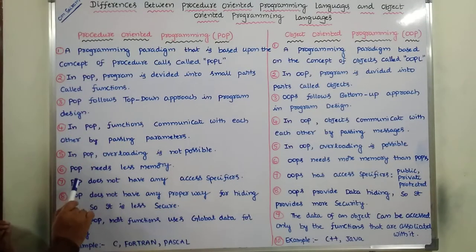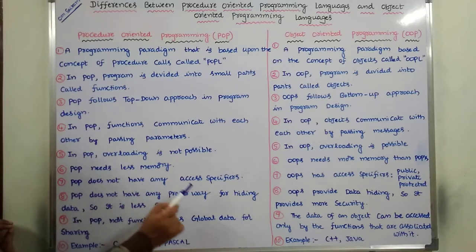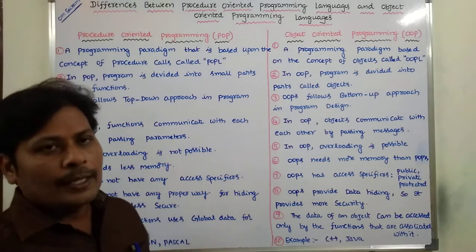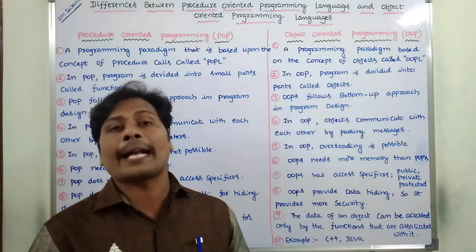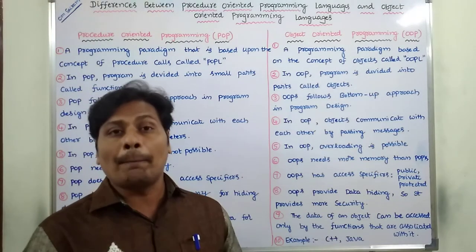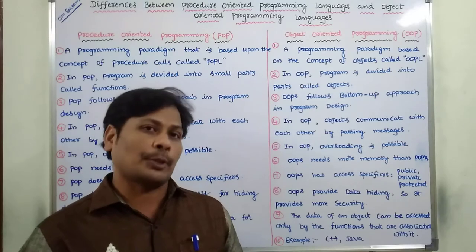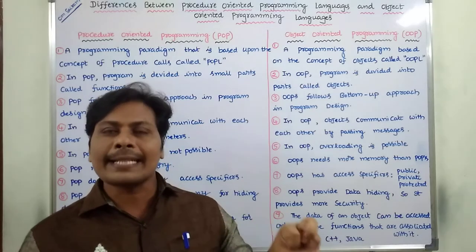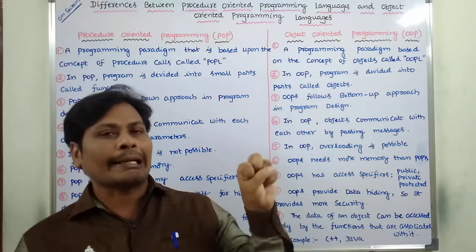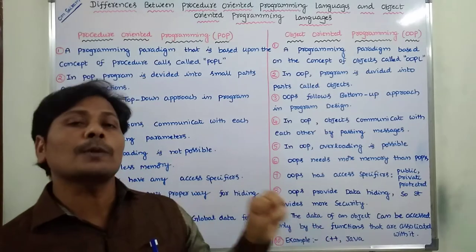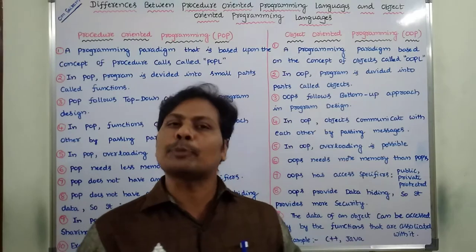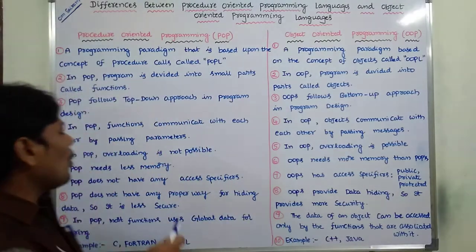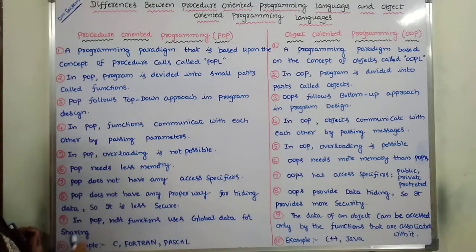The seventh difference: POPL does not have any access specifiers. In the case of OOPs, there are three types of access specifiers: public, private, and protected. To access the data of a particular class, we use these access specifiers. But there are no access specifiers in Procedure Oriented Programming Language.